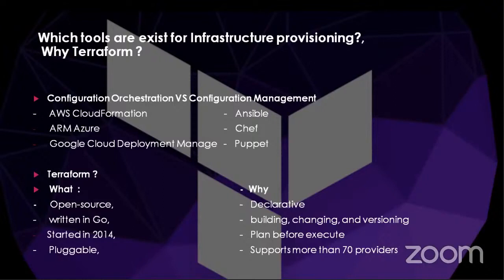With Terraform you just specify what you want and it will do it for you. There's build, change, and versioning functionality — you can build your code, change it, and version it. Any time you want to change your code it will replicate to your private or public cloud. There's plan-before-execute: you can plan, check the provider, and get output on whether it's possible or will throw an error. Terraform supports more than 70 providers, including AWS, Azure, VMware, and OpenStack.